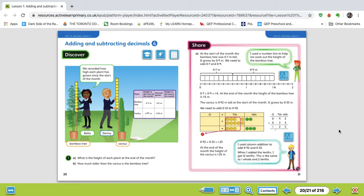So make sure that when you're adding these numbers together that you're keeping place value or that you're using a number line like they are. Number lines are really useful, but make sure that they're spaced properly. So at the start of the month, the bamboo tree was 0.7 meters tall.